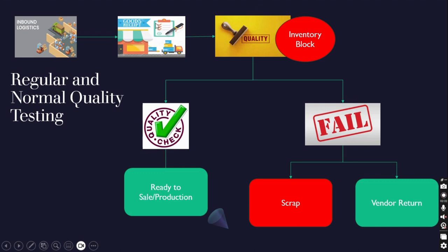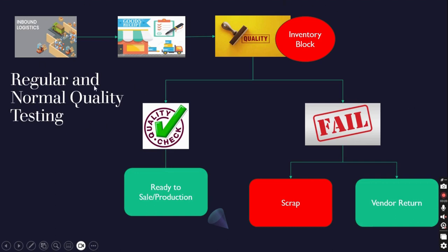Once the goods receipt is done, the quality process comes into the picture and we impose an inventory block on those goods received. That means even if we have received the goods, they will not be available for production or sale. They will go through the quality control process. If the quality check is passed, they will be ready for sale or production. If it fails, it will either be scrapped or returned to the vendor. That is the holistic view of the quality process.